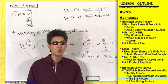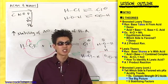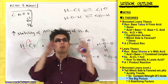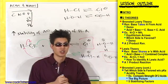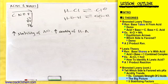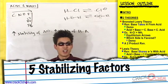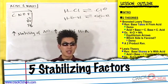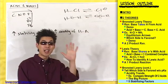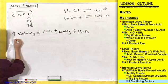The reaction always favors the side with the weaker acid. I'm just trying to give you the big picture of what's going on here. So how do we know which conjugate base is going to be more stable? Well, we have five stabilizing factors for you to determine this.